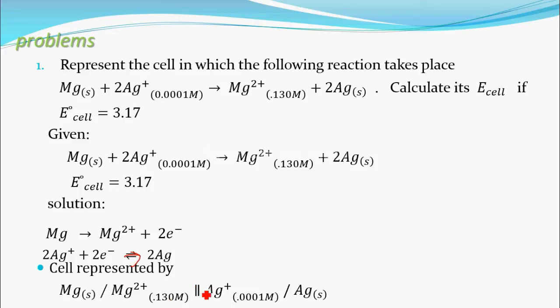Double bar indicates the salt bridge. Now come to this side where reduction happens. The other side is where oxidation happens, the anode. On this side, Ag⁺ will convert to Ag, this is the reduction reaction. The single bar indicates separation between Ag⁺ ions in solution and solid Ag. You can write the concentration of Ag⁺ solution, given as 0.0001 molar.